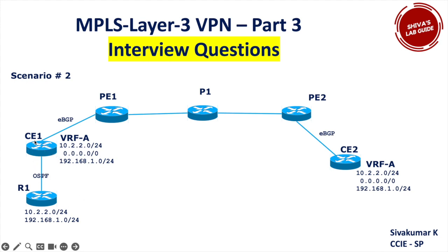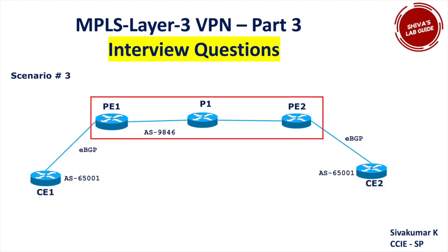The point to check is CE1 to R1: they are running OSPF. We need to check whether CE1 is redistributing BGP into OSPF properly. If the configuration is correct, R1 should receive those routes. But in this case, even with redistribution configured correctly, we still don't see the routes in R1 — that is the question to think about.